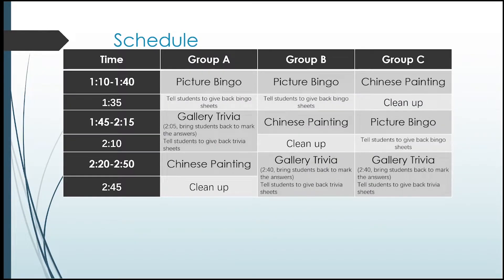Here is our schedule. Group A from 1.10 to 1.40 will be doing Picture Bingo. Five minutes before 1.40, please tell all the students to give back the bingo sheets — they can't keep them. At 1.45 to 2.15, Group A will be doing Gallery Trivia, and then 2.20 to 2.50, Chinese Painting. Clean up within the last five minutes before 2.50. Group B will do Picture Bingo first, then Chinese Painting, then Gallery Trivia. Group C: Chinese Painting, Picture Bingo, Gallery Trivia.